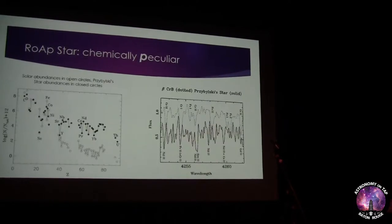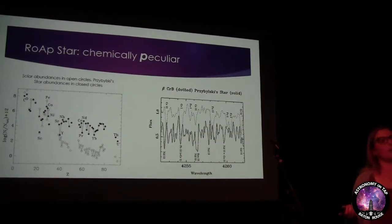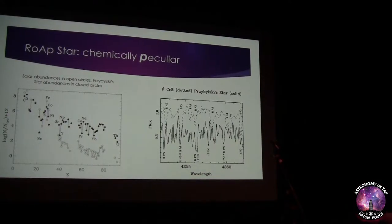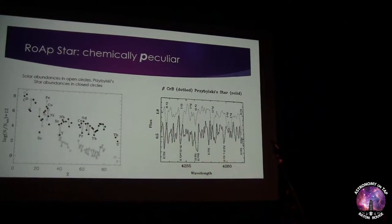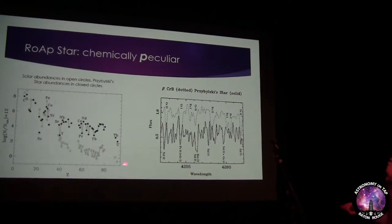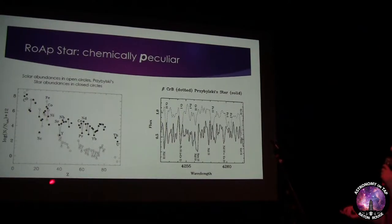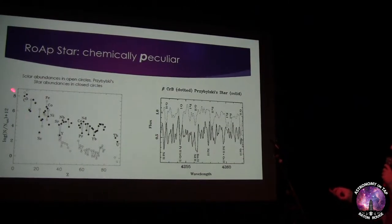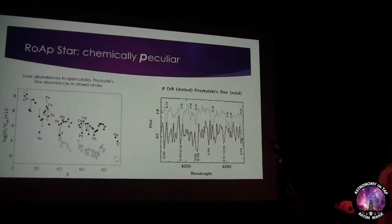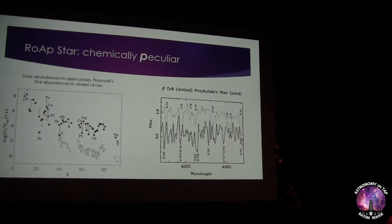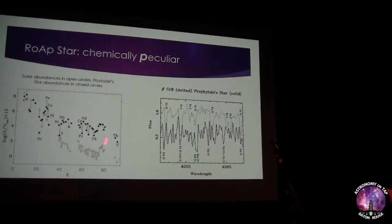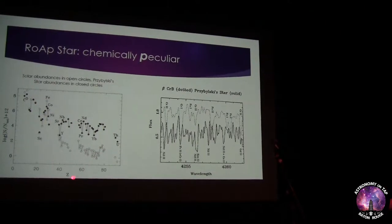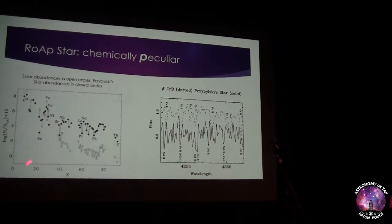The last part of ROAP star means it's chemically peculiar. The elements in the star are different from what we're used to. In this graph, the open circles show different elements in the Sun plotted by atomic number versus abundance. The closed circles show elements in Chbilsky's star, and it doesn't take a genius to see that these are really different — weird stuff is going on.